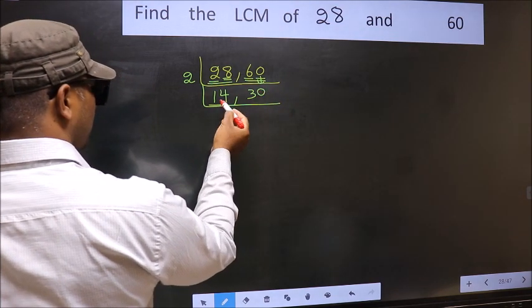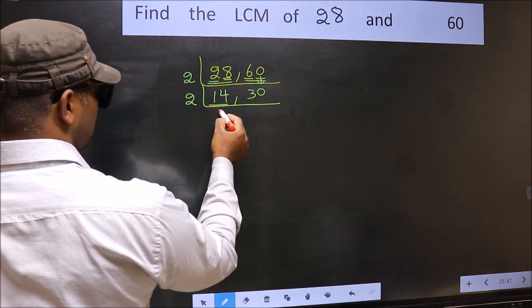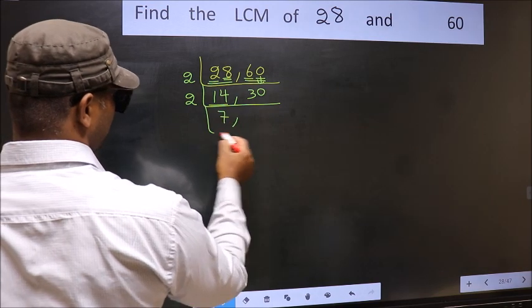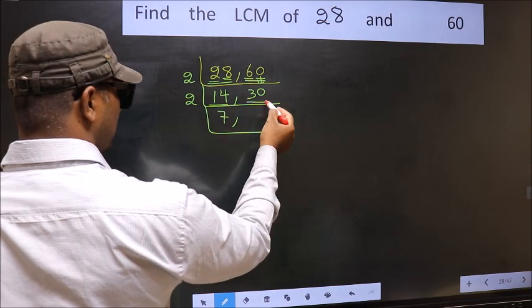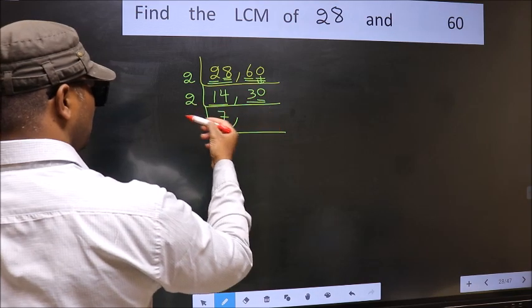Now here we have 14. 14 is 2×7, 14. The other number 30, last digit 0 so this is divisible by 2.